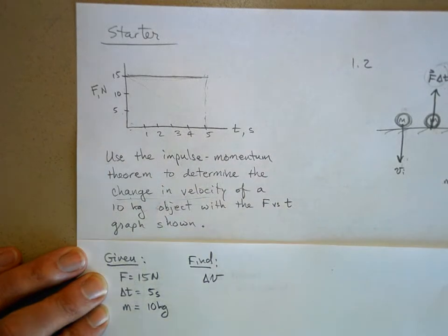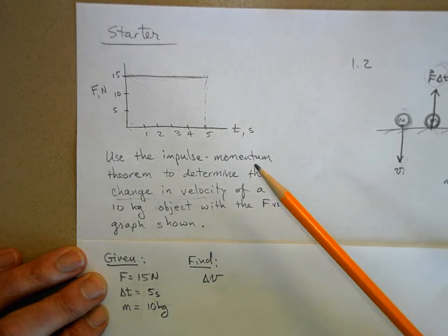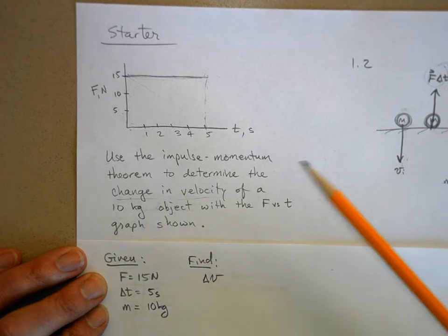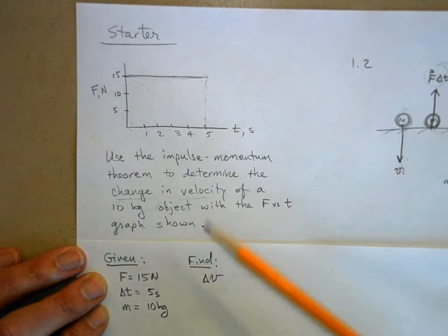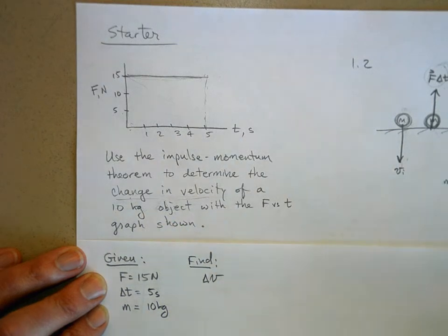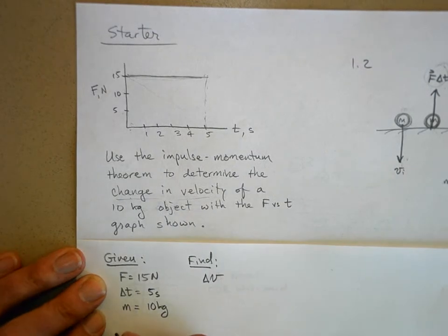So now there's lots of ways of doing this problem. We could have used the stuff we learned in unit 4. You know, Newton's second law, force equals mass times acceleration. We could figure out the force is 15, I know the mass is 10, so the acceleration is 1.5 meters per second squared. And then I can use the kinematic equations to figure out my change of velocity. And that'd be fine if you did that. But for this unit, I want to use the impulse momentum theorem, which is just as easy, if not easier, than doing all that.